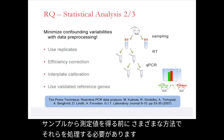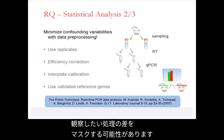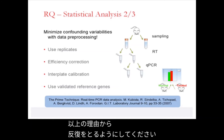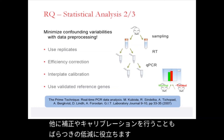Before we obtain measurements from our samples, we need to handle and process them in various ways. In this process, variabilities are introduced. Technical variabilities like these may obscure the treatment distinctions that we want to observe, and we therefore desire to minimize these confounding variabilities. For this and other reasons, we use replicates. Several other types of corrections and calibrations may also help to minimize confounding variabilities.